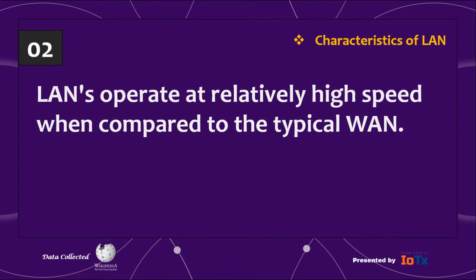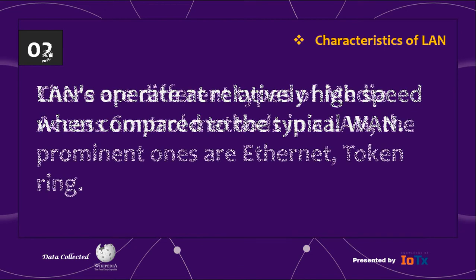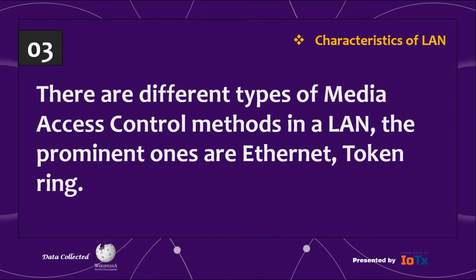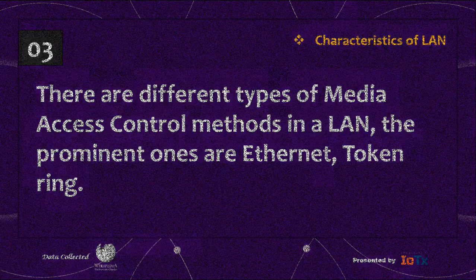Number 2: LANs operate at relatively high speed when compared to the typical WAN. Number 3: There are different types of media access control methods in a LAN. The prominent ones are Ethernet and Token Ring.